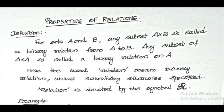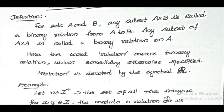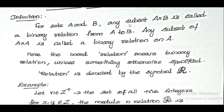First of all, the definition. For a non-empty set A and B, A cross B denotes the Cartesian product, which is equal to the set of all ordered pairs. Any subset of A cross B is called a binary relation from A to B, and any subset of A cross A is called a binary relation on the set A.